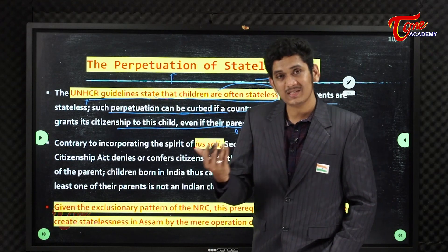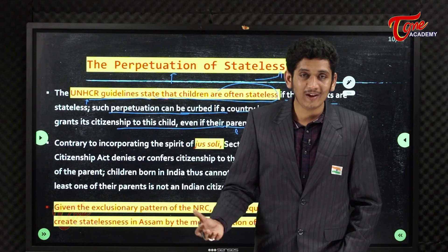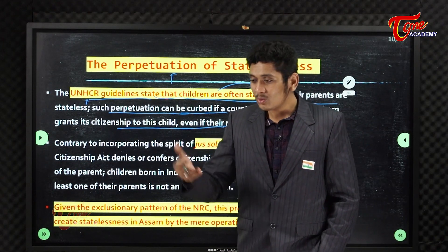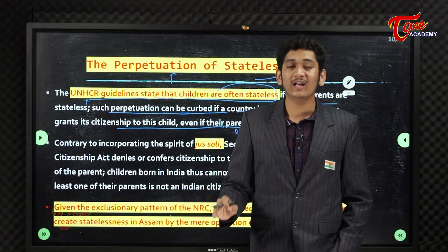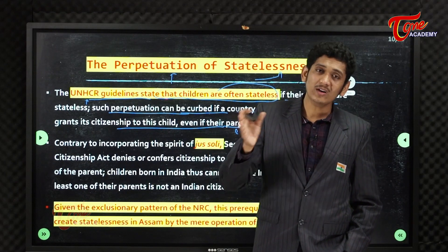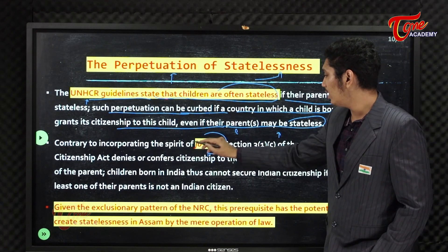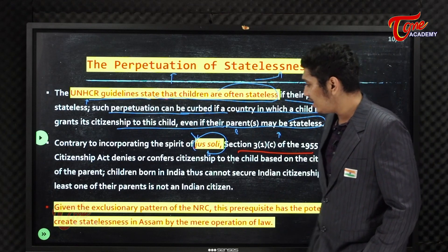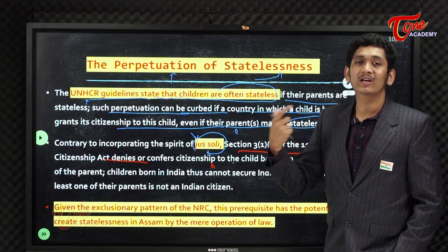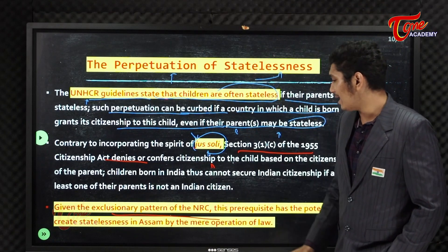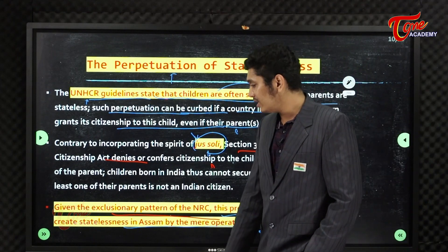In the USA, any person born on American soil is declared a citizen. But in India, according to the Citizenship Act 1955, there is no provision saying a person born in India will automatically be declared a citizen. Either of his parents — father or mother — must be a citizen of India. A person directly born on the land of India is not given citizenship by birth, which is called Jus Soli. Under Section 3(1)(c) of the Citizenship Act 1955, this denies citizenship to children of stateless people, making them further stateless.